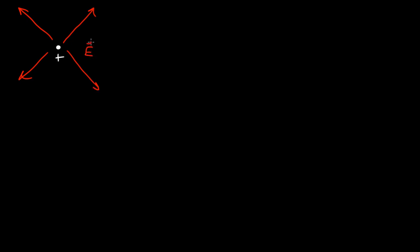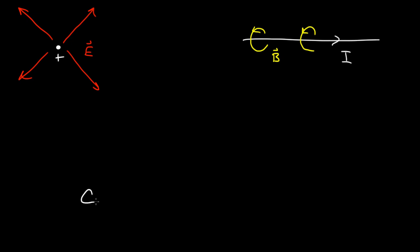You might know that if you've got a positive charge sitting out in space, it's going to create an electric field, and that electric field is going to point radially outward away from the positive charge. And you might know that if you've got a current in a wire, that current is going to create a magnetic field, and that magnetic field is going to loop around that wire. But people started to realize there's another way to create a magnetic field besides having a current. It turns out if you have a changing electric field in some region of space, even if that region has no current in it, that's going to induce or create a magnetic field.